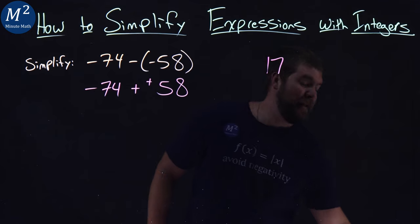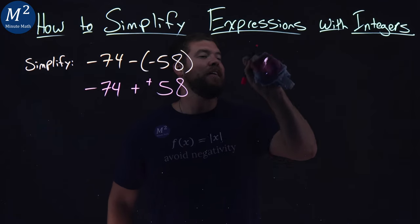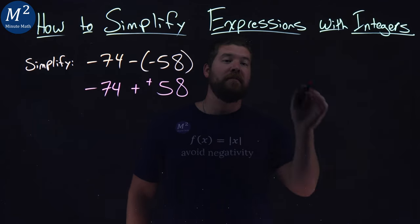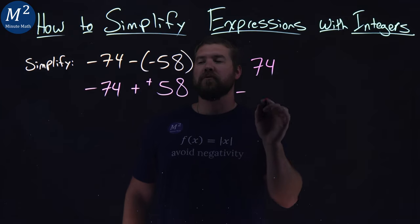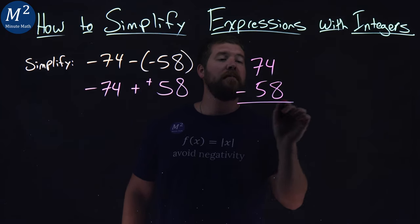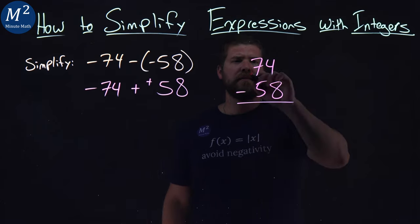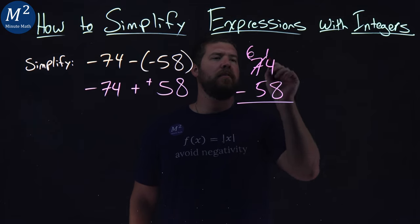So, I take 74, not 17, Sean, flip that around, 74, and I'm going to subtract a 58 from that. Well, 4 minus 8, can't do that. 7 cancels out, plus 6, carry 1.